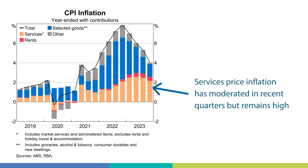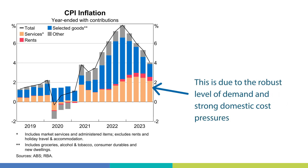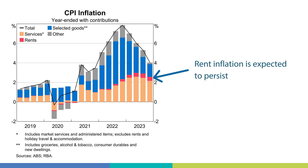Looking now at services, the orange bars show the contribution of selected services to inflation — things such as eating out and insurance. Services price inflation has moderated in recent quarters but remains high, because there is still a strong level of demand for services and there are also strong domestic cost pressures. We can also focus on specific services such as rent. The red bars show that rent alone has made a sizeable contribution to inflation recently, and this is expected to persist because of ongoing tightness in rental market conditions.